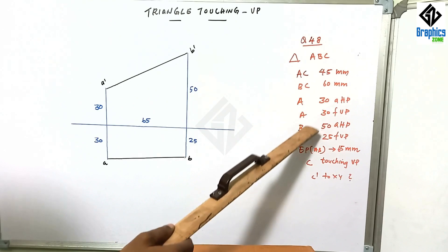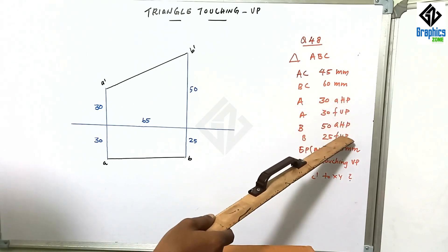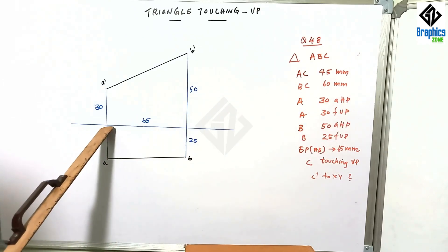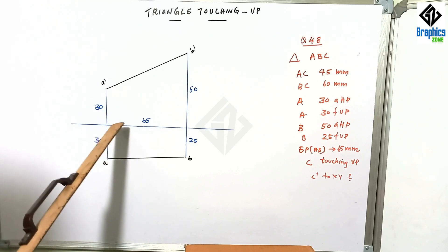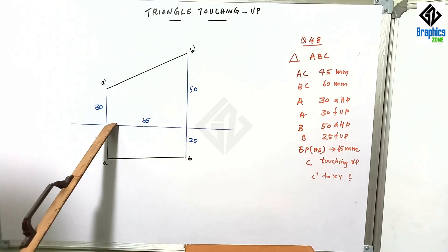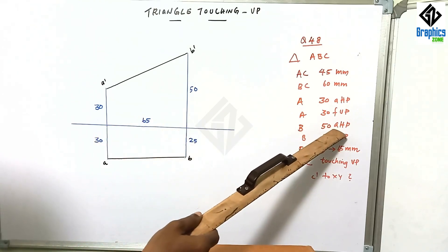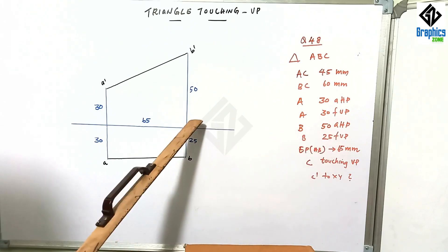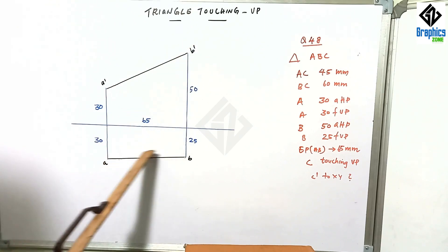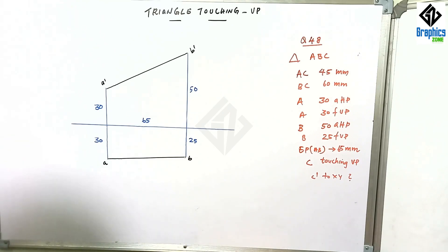Point A is 30 front of VP and 30 above HP. Point B is 50 above HP and 25 front of VP. The distance between the projectors of point A and B is 65. We have to find out what is the location. It is very easy to see how to locate. We can locate here C dot dot C.